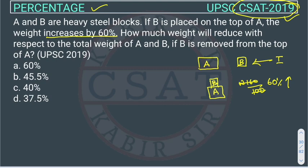He is asking the percentage of B with respect to the total weight of A and B. Because he is asking how much weight will reduce. Since B is on top of A, the weight will get reduced only — the weight of B will get reduced.